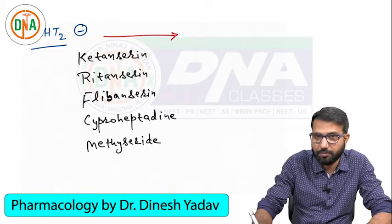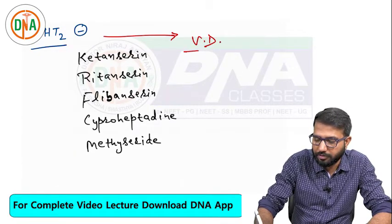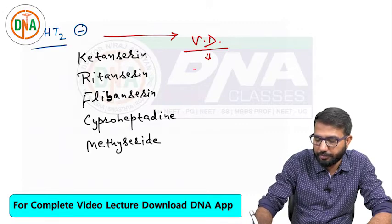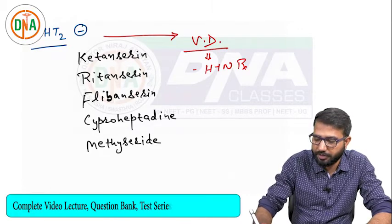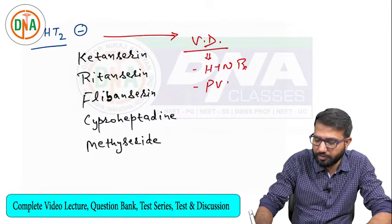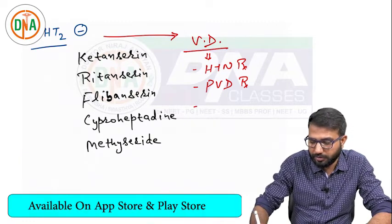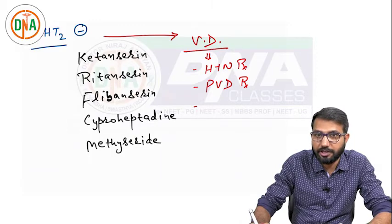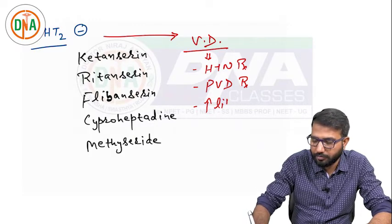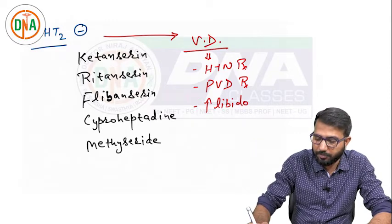These 5-HT2 antagonists cause vasodilation by blocking the receptor. Because of their vasodilator nature, these drugs can be used in hypertension treatment and for peripheral vascular disease like Raynaud's disease. They can also be used for erectile dysfunction and to increase libido in females — so they increase sexual desire.